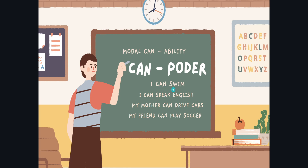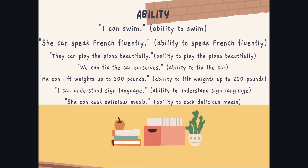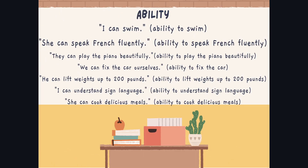CAN, e inmediatamente después de este modal, vienen verbos en presente. ¿Cómo lo observas? Swim — nadar. Speak — hablar. Drive — conducir. And play — jugar. Vamos a ver más oraciones referente a cómo utilizar CAN for ability. Recuerda: CAN — habilidad. La misma que teníamos acá.